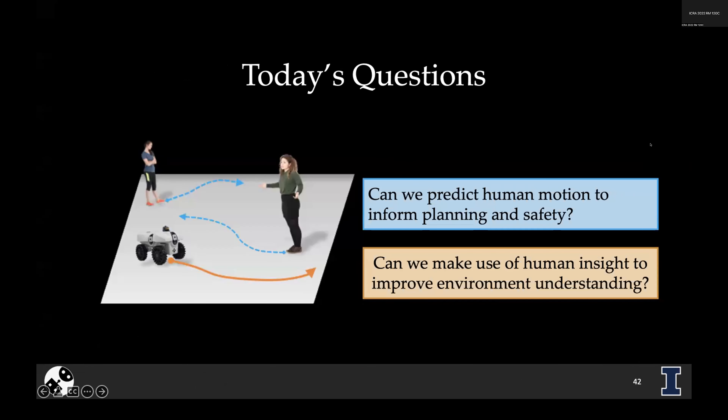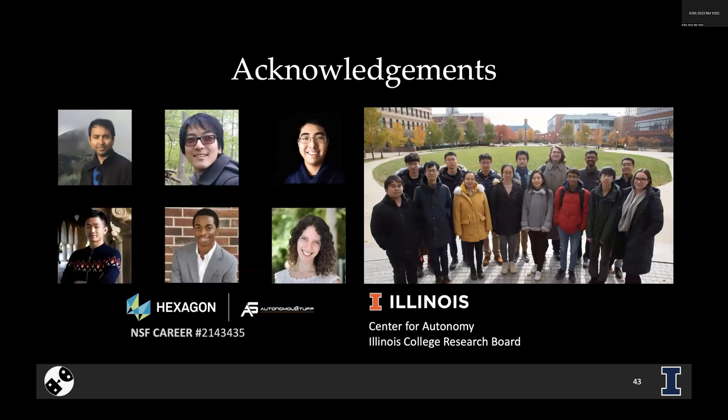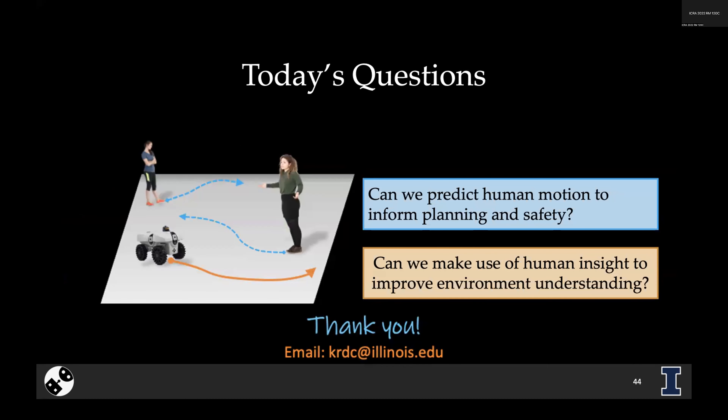Today we talked about how we can predict human motion. The big takeaway is that incorporating different insights from the human can be very important, and finding resilient methods for incorporating that into prediction and downstream tasks can really help inform safe interaction and hopefully enable good deployment as we get these robots out in the world working with people. I'd like to acknowledge my students, in particular Joe Huang who was the lead author on this work, and all of my sponsors. Thanks for your time.